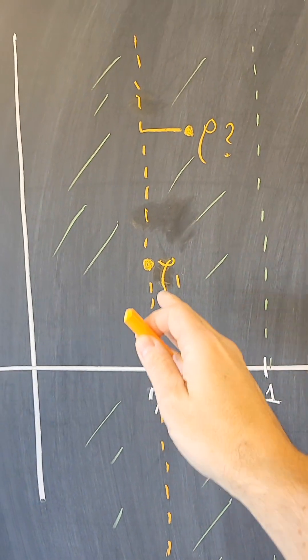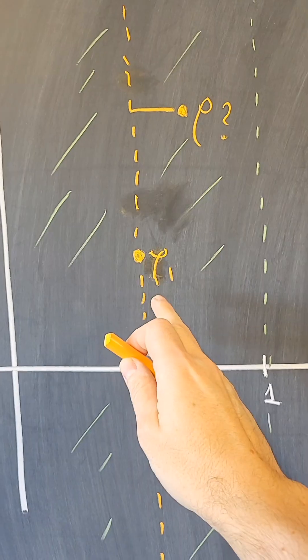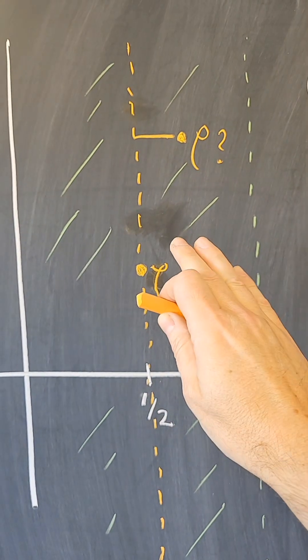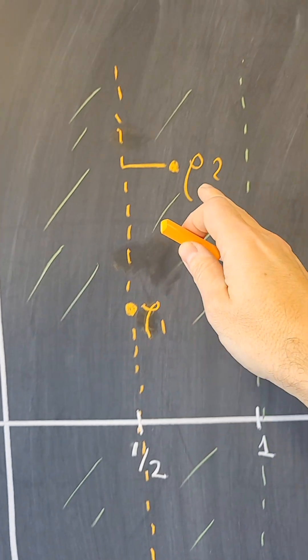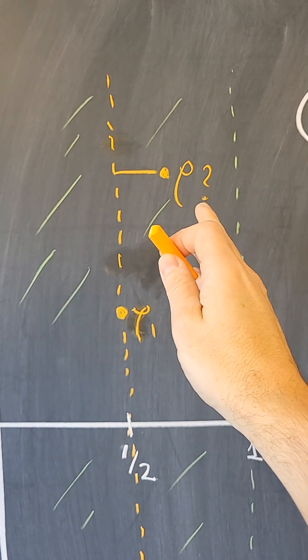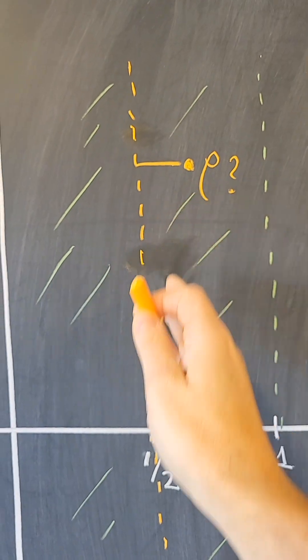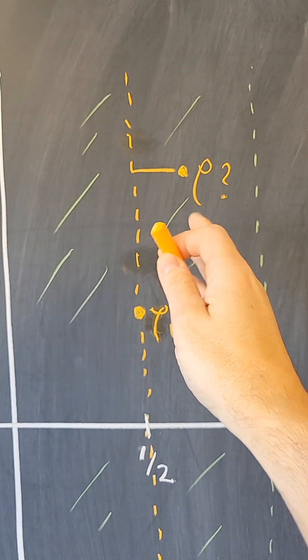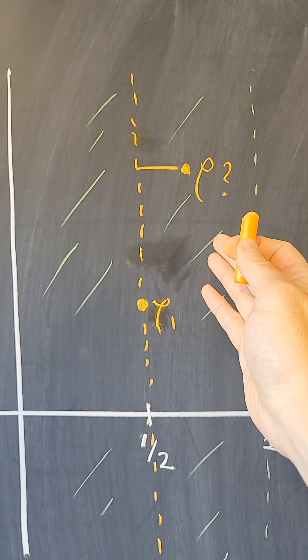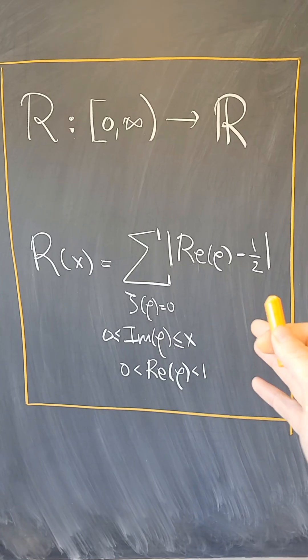And as far as we have found, all the zeros are in fact in there so far. But if there was some other zero that is off of that line, somewhere here at some distance from the line equals one-half, then the conjecture would be proved to be false.